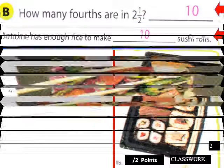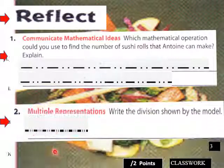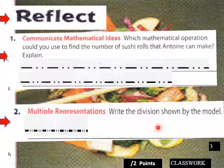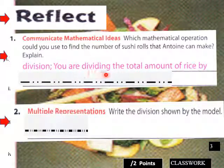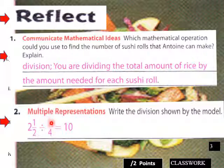Reflect: which mathematical operation could you use to find the number of sushi rows Anton can make? You use division — dividing the total amount of rice by the amount needed for each row. So two and a half divided by one-fourth equals ten. Two and a half is five halves; divided by one-fourth means multiply by four over one: five halves times four over one equals twenty over two, which equals ten.